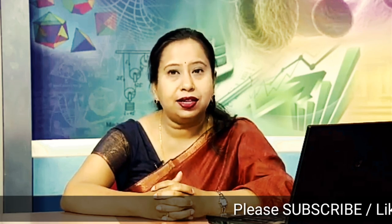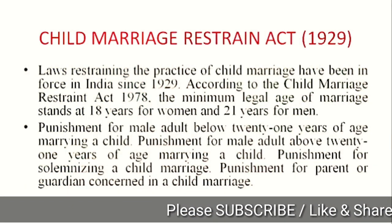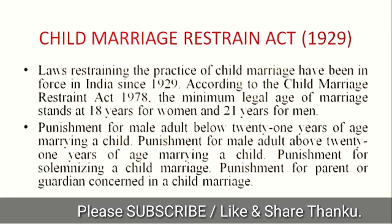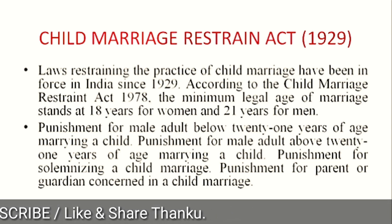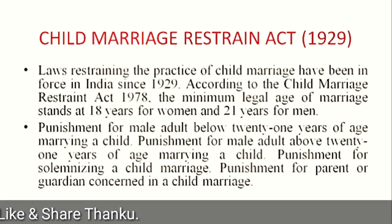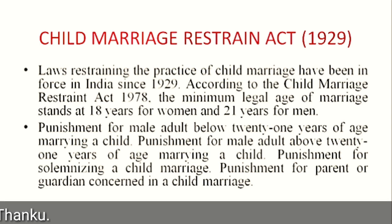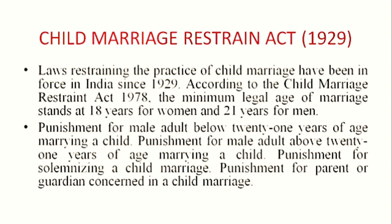The first legal act that we would like to discuss is the Child Marriage Restraint Act of 1929. As you all know, traditionally child marriage has been one of the very problematic issues of Indian society, and laws restraining the practice of child marriage have been enforced in India since 1929. According to the Child Marriage Restraint Act 1978, the minimum legal age of marriage stands at 18 years for women and 21 years for men. Punishment for male adults below 21 years of age is also applicable to the parent as well as the guardian concerned in the case of child marriage.